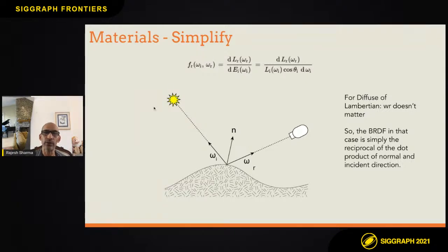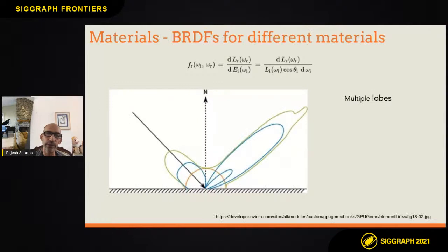You can think of this entire thing as a factor that is part of the material — a material property that behaves differently based on the light coming in, the angle you're viewing, and the normal at the intersection. Imagine having multiple objects that you can combine. These are called lobes, and you can combine them into making more complex materials. A material may consist of four or five lobes combined to make up the material, so you can have pretty much any kind of material you want.